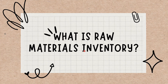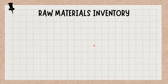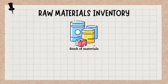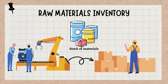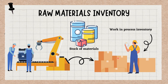Raw materials inventory refers to a business's stock of materials that have yet to be used in the manufacturing process to create a finished product. During this production process, raw materials are used to create work-in-process inventory or work-in-progress inventory, which turns into finished goods to be sold by the business.